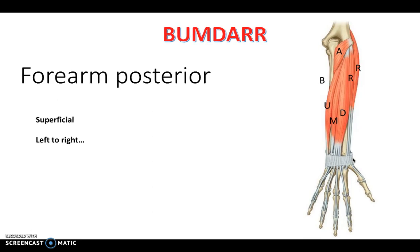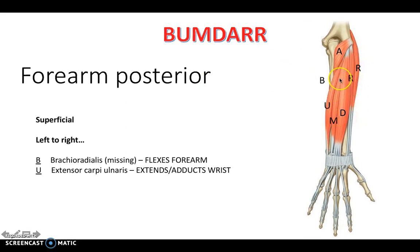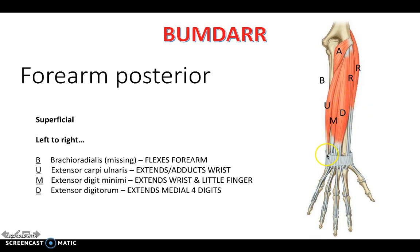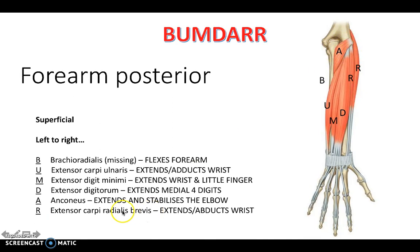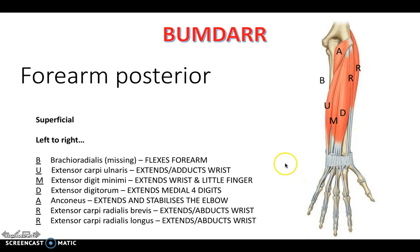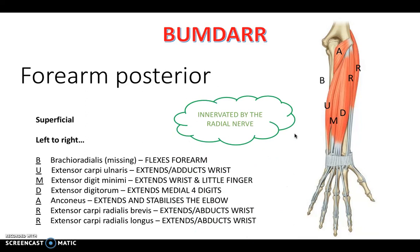Thinking posteriorly now, the superficial component is where many students get confused because there are a lot of muscles. We have brachioradialis, which flexes the forearm. Then extensor carpi ulnaris, which extends and adducts the wrist. Extensor digiti minimi, which extends the little finger and the wrist. Extensor digitorum, which extends the fingers. Anconeus, which extends and stabilises the elbow. And extensor carpi radialis brevis and longus - short and long - which both run down the radius bone and extend and abduct the wrist. The posterior forearm superficial compartment is innervated by the radial nerve.